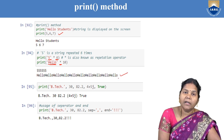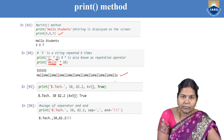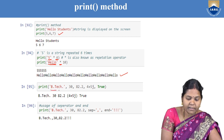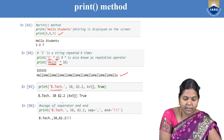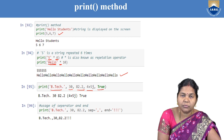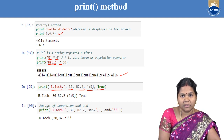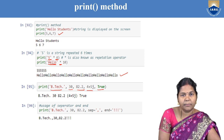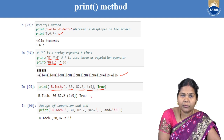If you want to print mixed type data — a set of values of different data types — you can print them in a single line. For example, 'BTEC' is a string, 30 is an integer, 82.2 is a float, 4.5 is a complex number, and True is a boolean. You can print different types of values in a single line separated by commas.